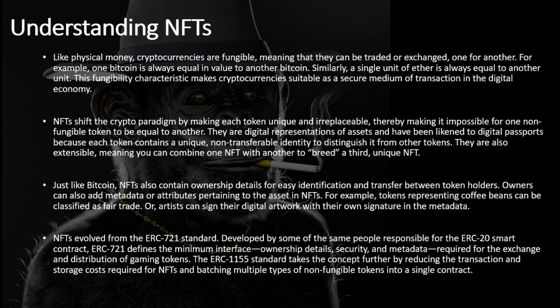Like physical money, cryptocurrencies are fungible, meaning that they can be traded or exchanged one for another. For example, one Bitcoin is always equal in value to another Bitcoin. Similarly, a single unit of Ether is always equal to another unit. This fungibility characteristic makes cryptocurrencies suitable as a secure medium of transaction in the digital economy.